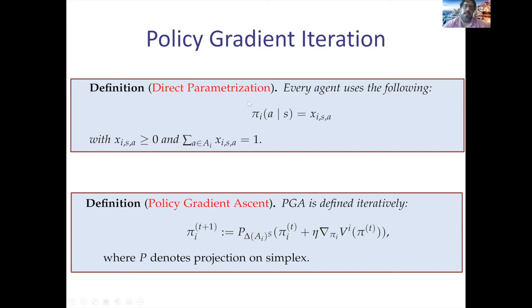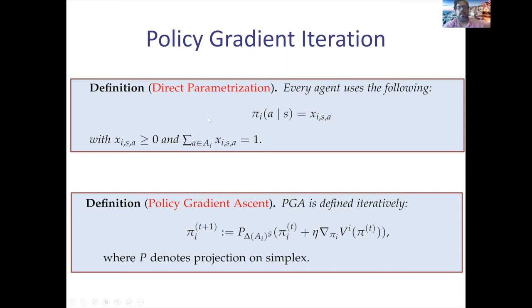We use what's called direct parameterization. For every agent i and every state-action pair, we define a variable xᵢ,s,a denoting the probability that player i chooses action a given he's at state s. This variable must be non-negative, and summing over all actions for a fixed state must equal one — since this is a probability distribution over actions.